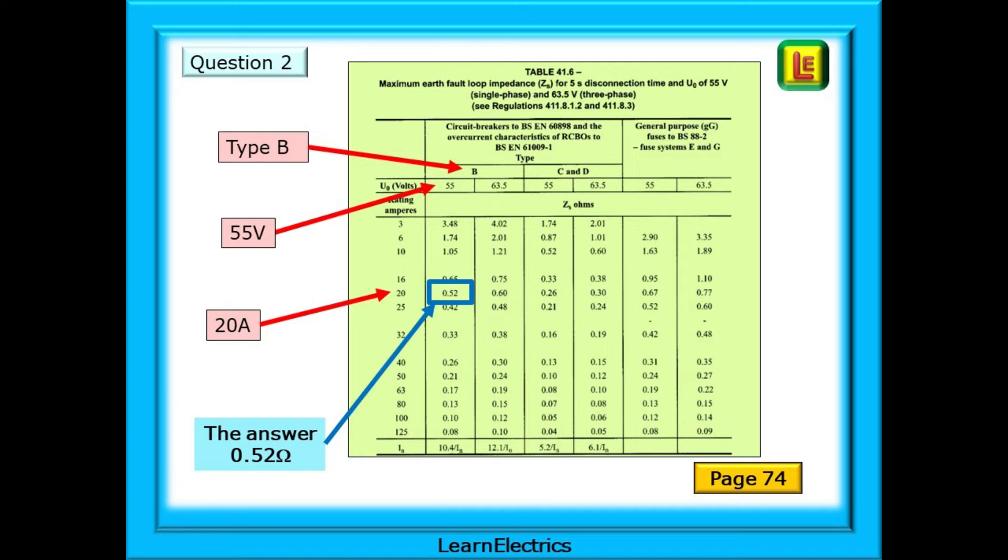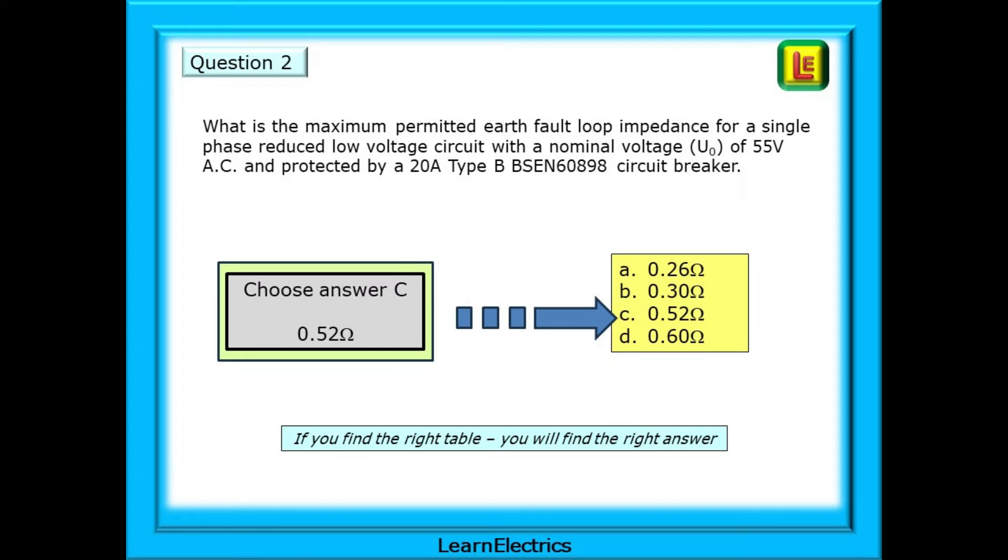Table 41.6 looks complicated. It's not. Follow the question. A type B breaker, so we have a choice of just two columns. 55 volts, so now we're limited to one column. 20 amps tells us which row we need, and where the row and column cross is the answer that we need, 0.52 ohms. We should choose answer C. The maximum earth fault loop impedance permitted is 0.52 ohms. If you find the right table, you will find the right answer.